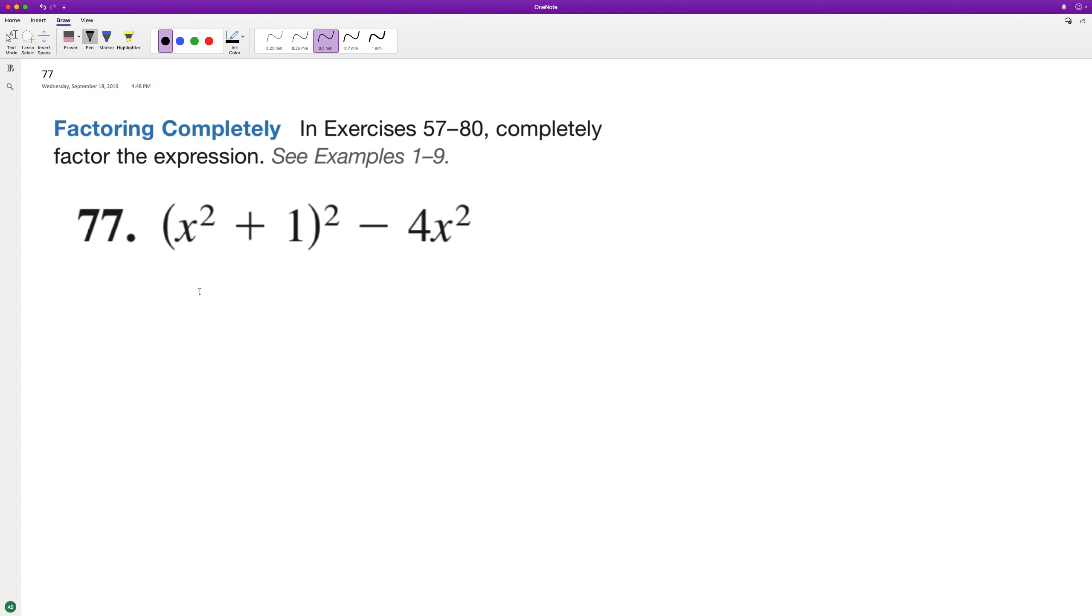For this problem, we can substitute x squared plus one with u, so we have u squared minus four x squared. This helps abstract it away and makes it easier to see. Using difference of perfect squares, we get u minus two x times u plus two x.